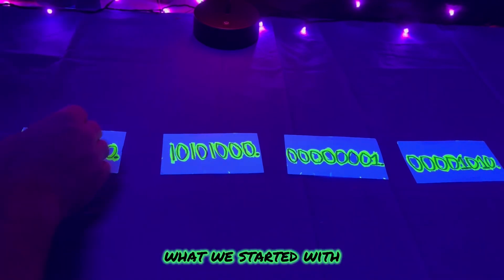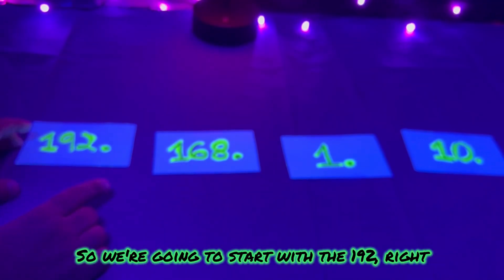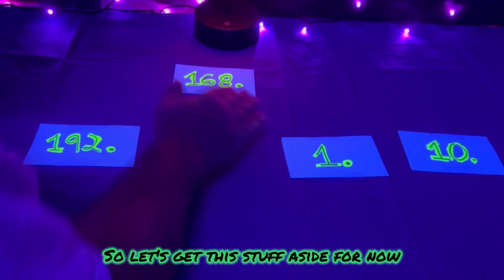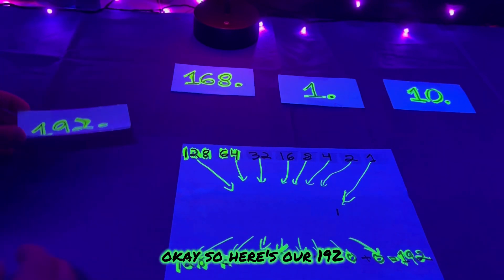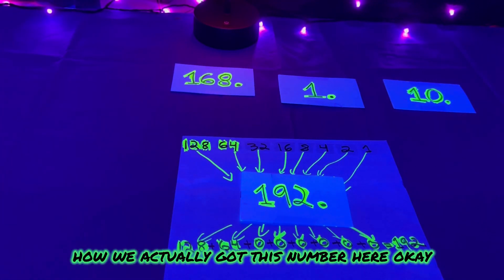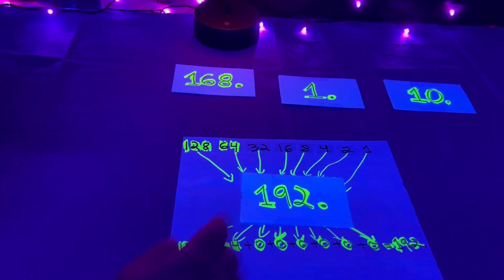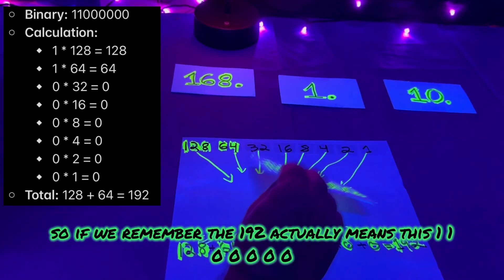Let's bring it back to what we started with. We're going to start with 192. To convert binary to decimal, you multiply each binary digit by two raised to the power of its position, starting from zero on the right, working your way to the left. So 192 in binary is 11000000.